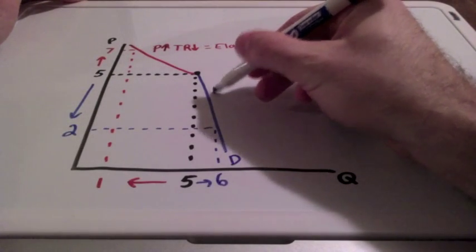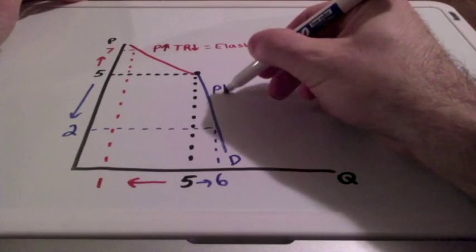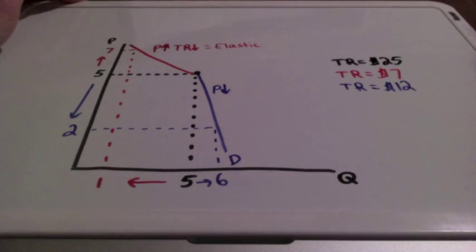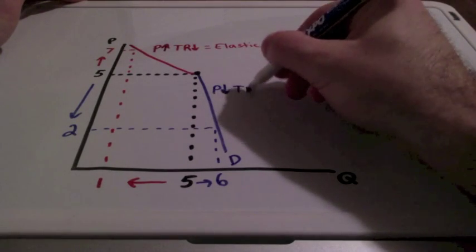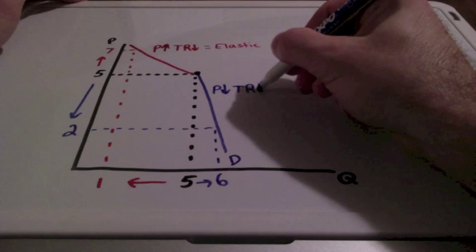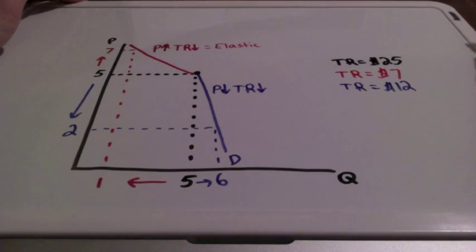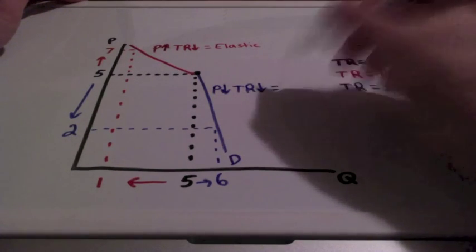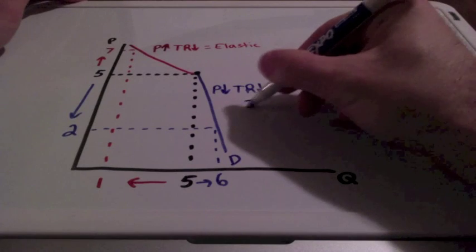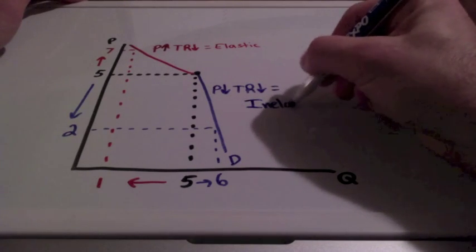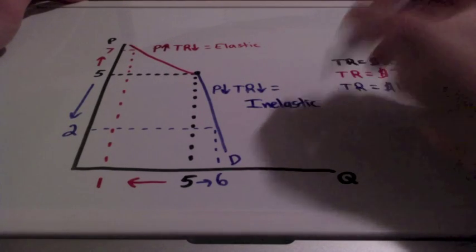When our price goes down, our total revenue is also going down. It went down from $25 to $12. This is referred to as the inelastic part of the demand curve.